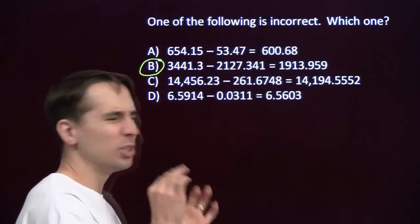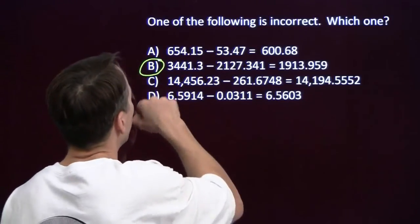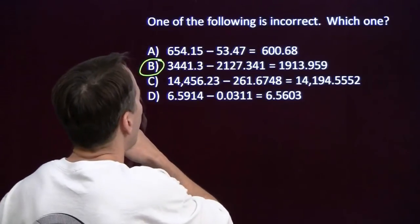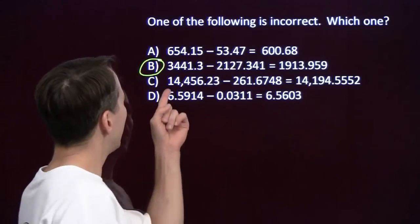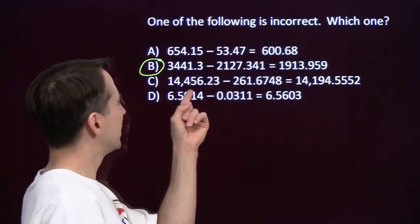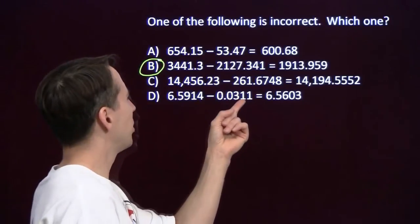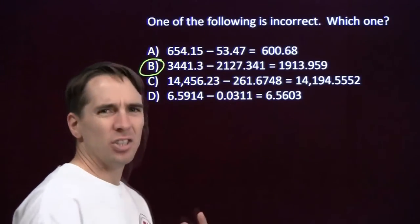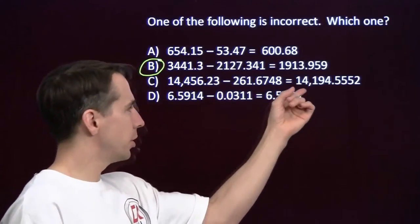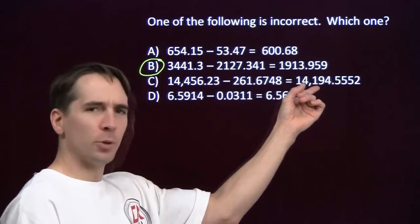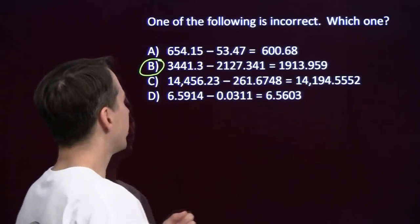Go ahead and check the other two just in case. On part C, I've got a number that's around 14,460, and I'm subtracting a number that's around 260. I should get something around 14,200. It's pretty close to 14,200, so the calculator got that one.